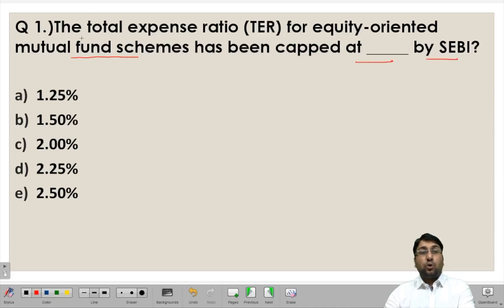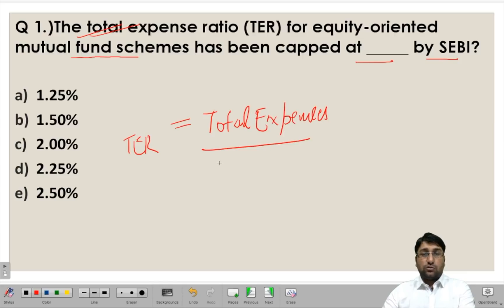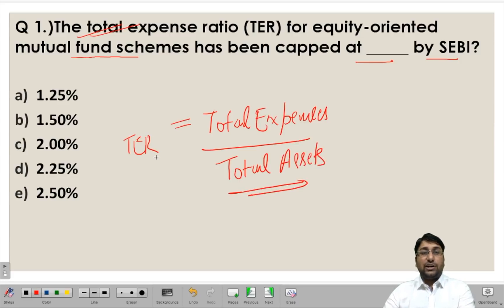When we talk about the total expense ratio, it refers to the ratio of total expenses or the total cost being incurred by the investor in making investment in a particular mutual fund, divided by the total asset. The formula for calculating your total expense ratio is the total expenses for the year — these expenses could be in any form, be it your cost of investment, be it your fees, be it your redemption fees — and it is divided by the total investment or the total assets throughout the year.